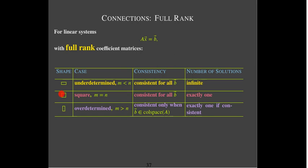If you have a full rank square system — same number of equations as variables — it is also consistent for all right-hand sides, but you get exactly one unique solution. If you have an overdetermined system, meaning more equations than variables, its shape is thin but tall. It is consistent only when B belongs to the column space of A. But if the coefficient matrix is full rank and the system is consistent, you get exactly one solution.